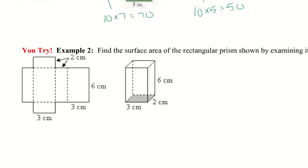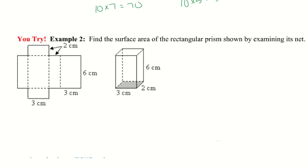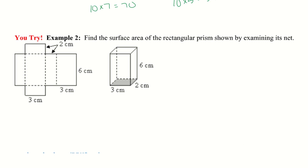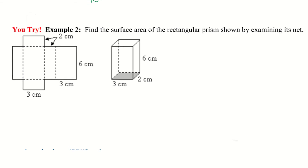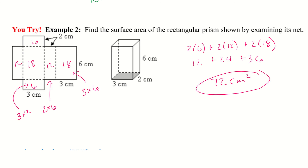I want you to go ahead and try example 2. This one isn't color coordinated, but we can see which shapes match up. Go ahead and give that a shot — pause the video, and when you come back the solution will be there. Here's number 2: I wrote down the area in each particular rectangle and then did the math off to the right.